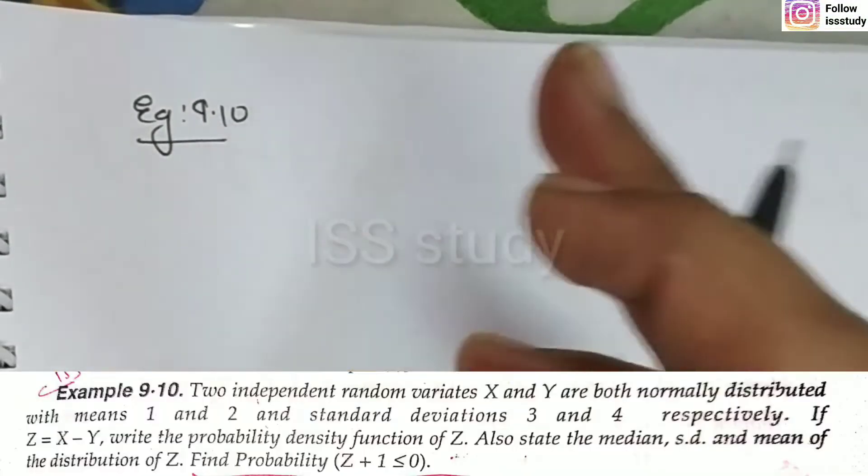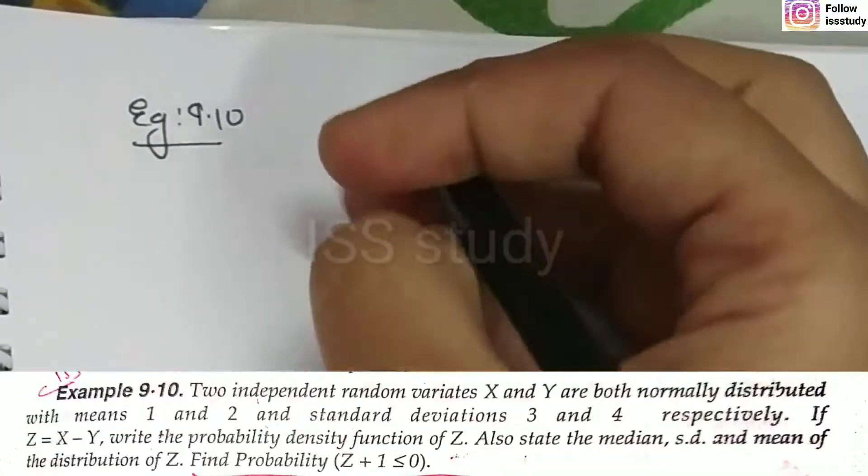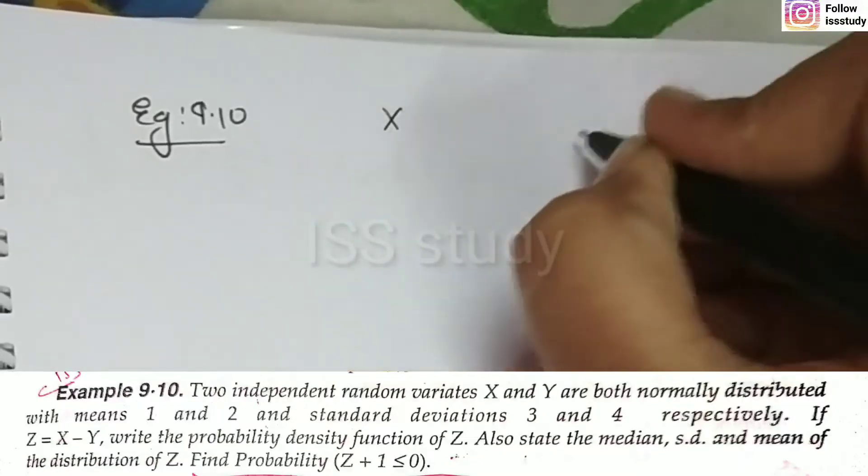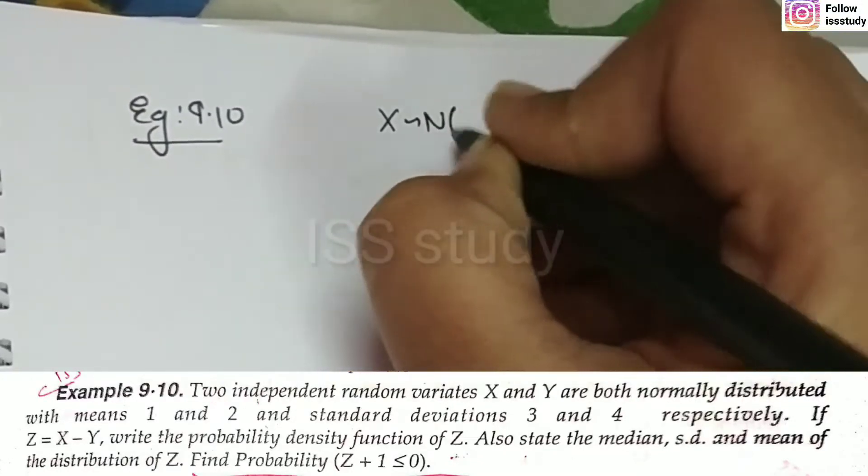It says two independent random variables, x and y, both are normally distributed. X and y are two independent random variables, which follow normal distribution.